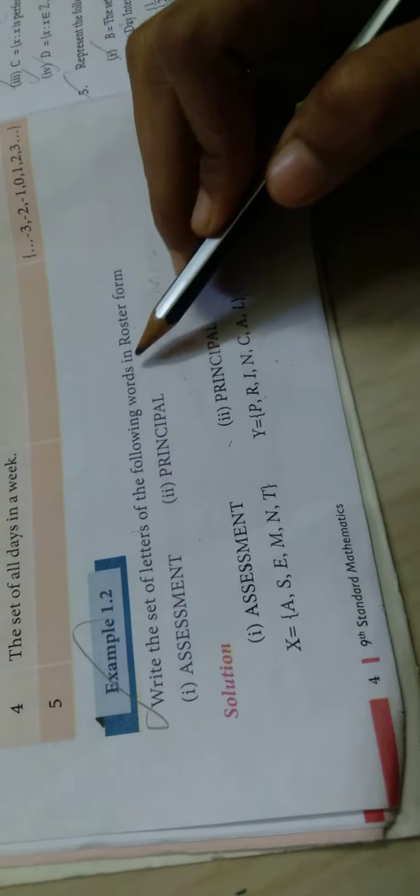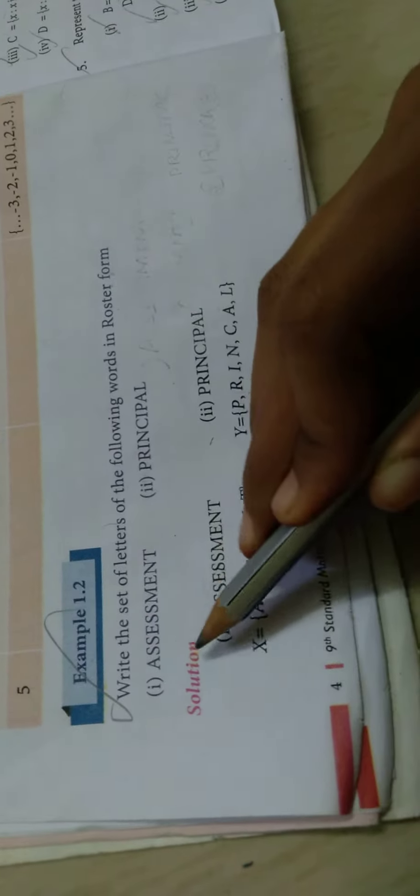Let's look at example 1.2 in the 9th math. Write a set of letters of the following words in Roster Form. Roster Form means the same words and the same letters are repeated.